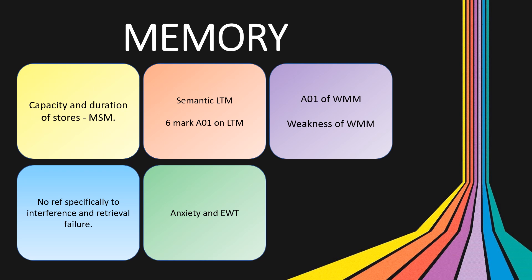For the working memory model, there hasn't been too much mentioned of it at all. There were six marks back in 2018 — four of those marks were asking for a strength of the model. So I'd definitely look out for a question on the weaknesses of the working memory model. Because you had the multi-store model 16-marker last year, I wouldn't be surprised to see an 8 or a 16-marker for the working memory model.